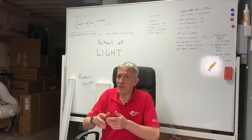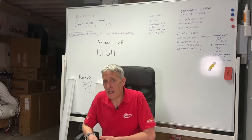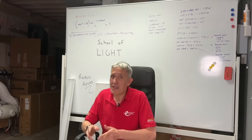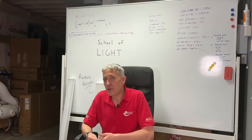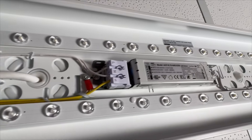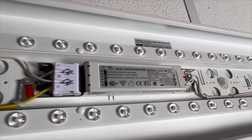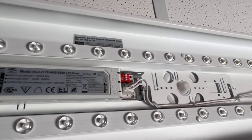Can anyone name another factor which can help to reduce eye strain and irritation among some users? Hammond? It's flicker. According to the Robus Scholar Plus datasheet, the fixture has a flicker-free LED driver. Well done, Hammond. Correct again. Choosing a fixture with a flicker-free driver can help eliminate another cause of irritation.